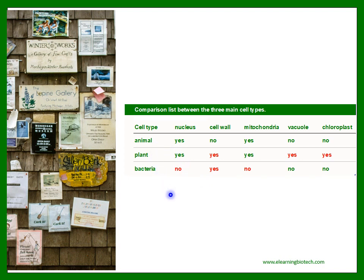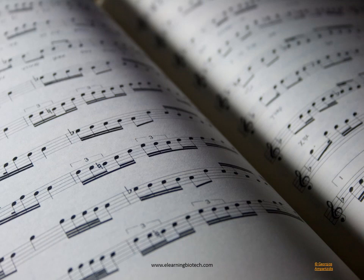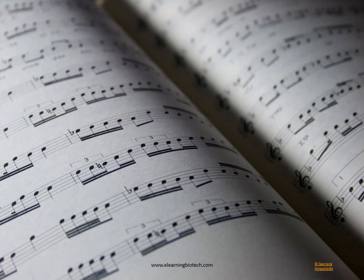Here is a summary checklist of what we have gone through in this first unit, presented as a comparison list between the three most important cell types: animal cells, plant cells, and bacteria. Highlighted in red are the main differences: the absence of a nucleus and mitochondria in bacteria, the presence of a cell wall in plant cells and bacteria, and the presence of a vacuole and chloroplasts in plant cells. Congratulations! You have now completed the first unit of this introductory course in biotechnology.